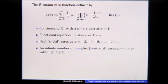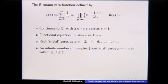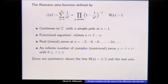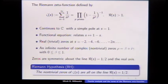It continues to the entire complex plane apart from a simple pole at s equals 1. There's a functional equation that relates s to 1 minus s, giving zeros on the real axis at the negative even integers, and there's an infinite number of complex zeros in the critical strip between 0 and 1. The zeros are symmetric about the real axis, and Riemann's hypothesis is that all the zeros are on the line real s equals 1/2, the line of symmetry from the functional equation.